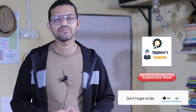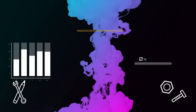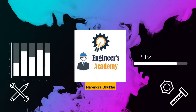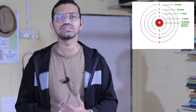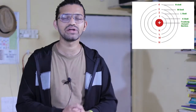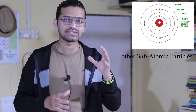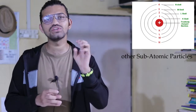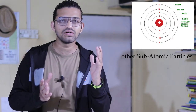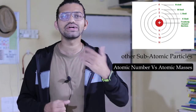Without wasting any time, let's begin with today's topic: the discovery of neutrons. After Bohr's atomic model, scientists in the 19th century conducted a variety of scattering experiments to discover other subatomic particles. Scientists found a clue by comparing the atomic masses and the atomic numbers of different atoms.